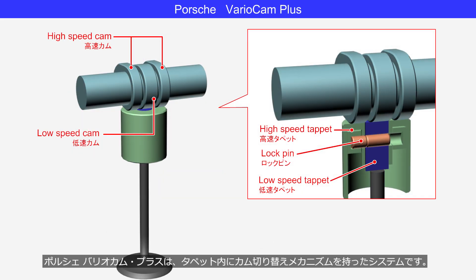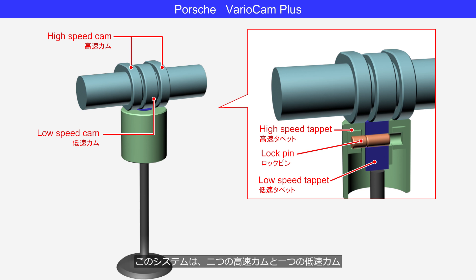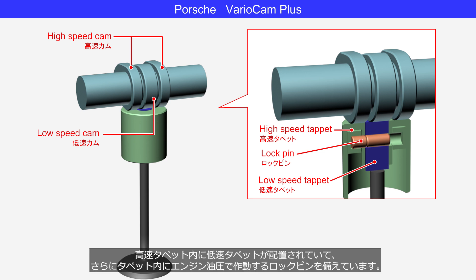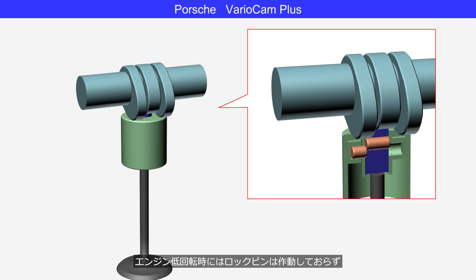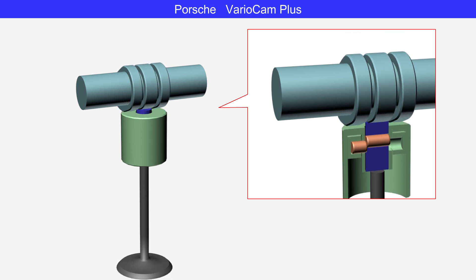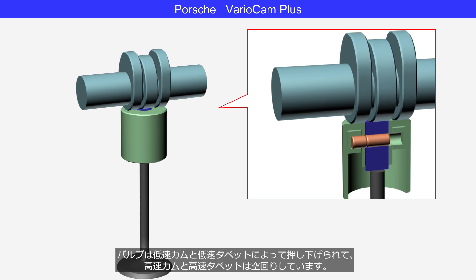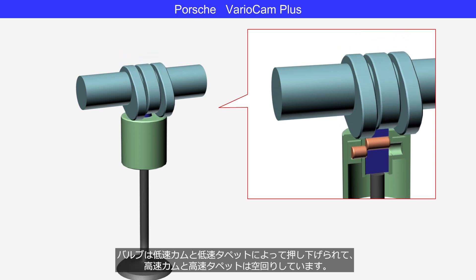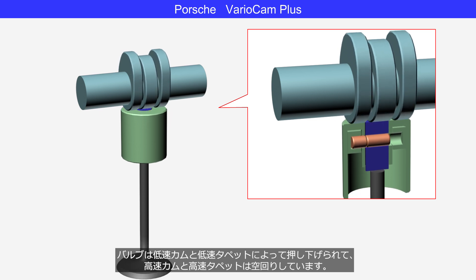The Porsche VarioCam Plus is a system that has a cam switching mechanism inside the tappet. This system includes two high-speed cams and one low-speed cam. A low-speed tappet is placed inside a high-speed tappet, and the tappets are equipped with a lock pin that operates using engine oil pressure. At low engine speeds, the lock pin is not engaged. The valve is pushed down by the low-speed cam and low-speed tappet, while the high-speed cams and high-speed tappet idle.